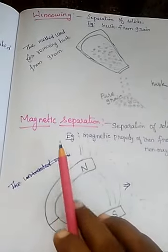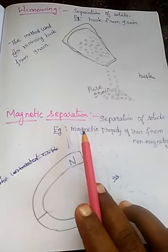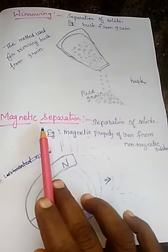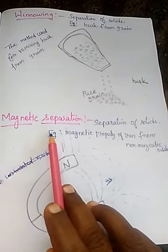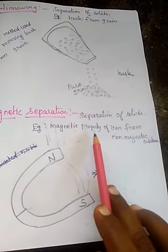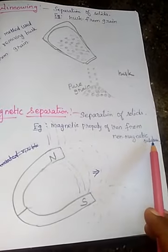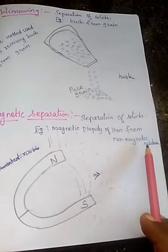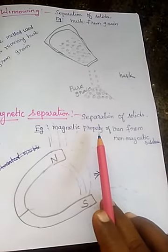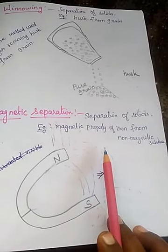Here we see magnetic separation. What is magnetic separation? Separating solids using a magnet is called magnetic separation. The magnetic property of iron or magnetic substances is used to separate them from non-magnetic substances. A magnetic substance is a substance that is attracted to a magnet.